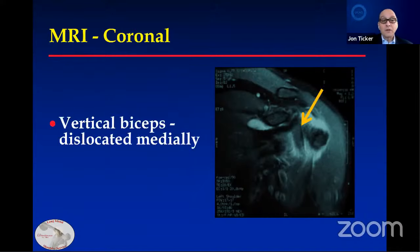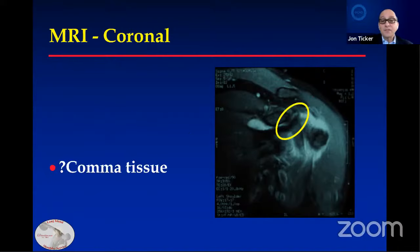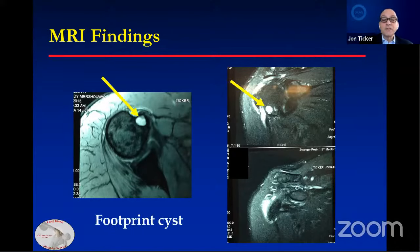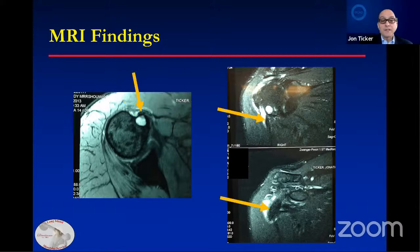We also see the vertically dislocated biceps, and I believe this is the comma tissue, which if followed would lead you to the supraspinatus tear. Other interesting features I need to know when planning surgery: is there a footprint cyst? Not only important from a clinical standpoint, but I need to know where to place my anchors — I don't want to place it in that location. You can also see the biceps tendon in this patient: on the left, perched; on the right, also perched to dislocated.